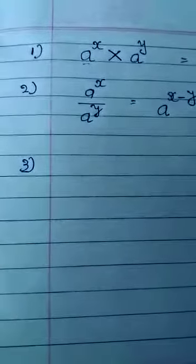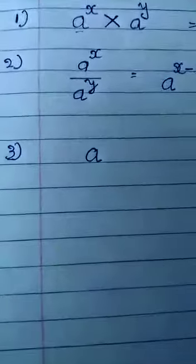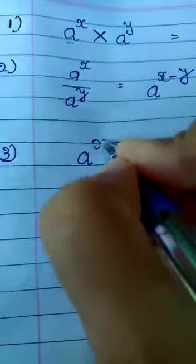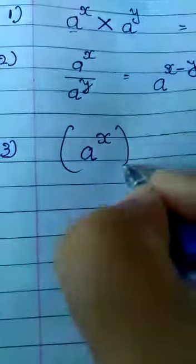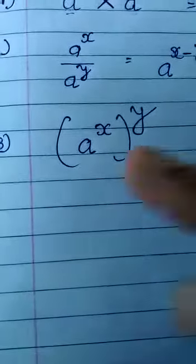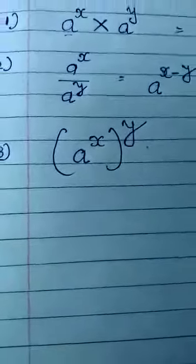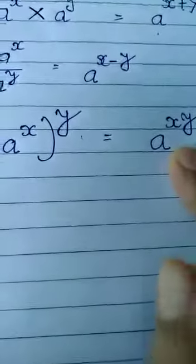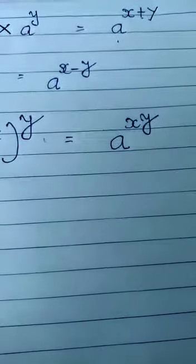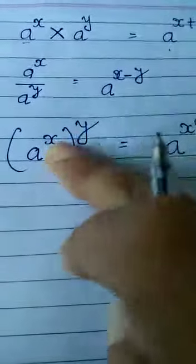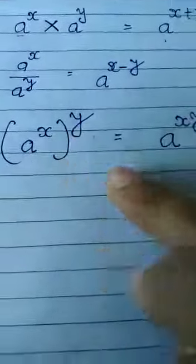The third rule is the power of a power rule. When you have a to the power x, and then that whole thing is raised to the power y — power of the power — it becomes a to the power x times y. When there are two powers, we multiply them together.